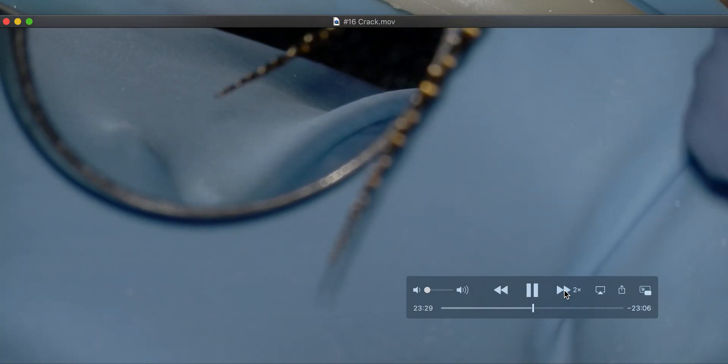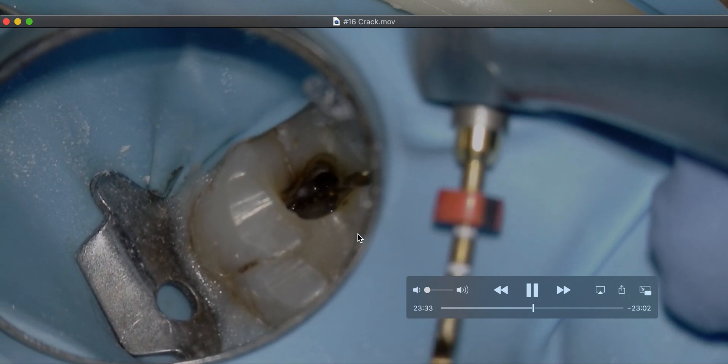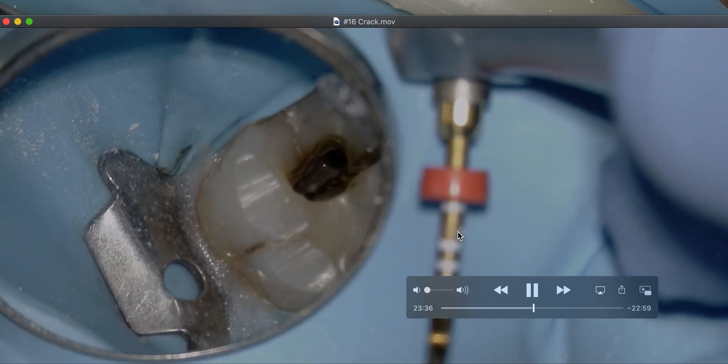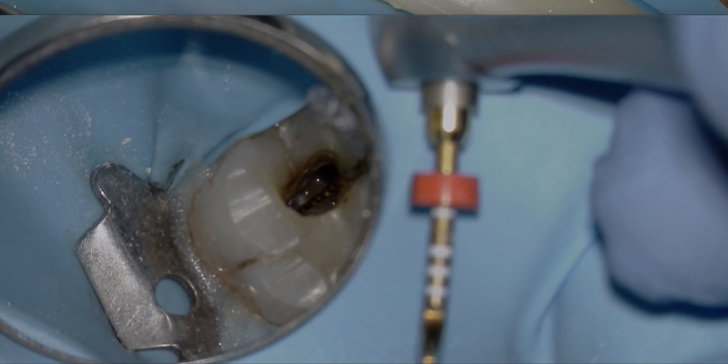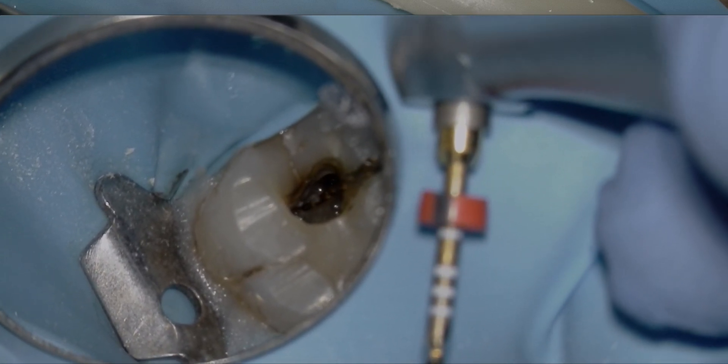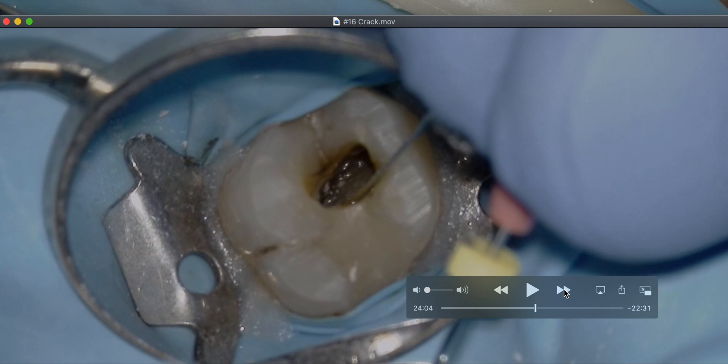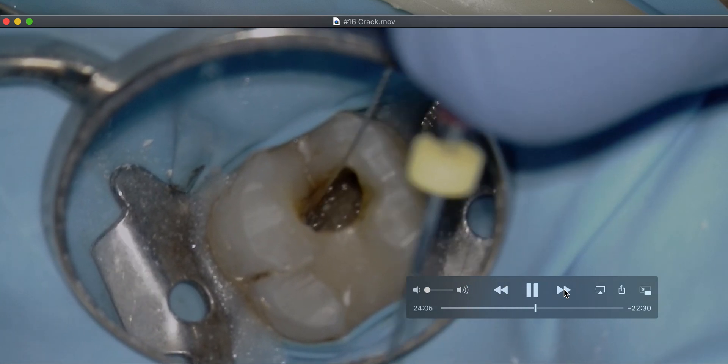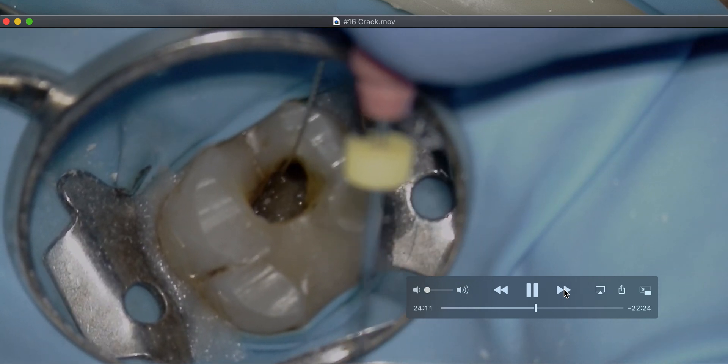This is the problem with maxillary molars. There will be a point where you're kind of like, oh, I give up. This is the next level. I've had enough. I can't get that file in there. I'm going to see if my WaveOne Gold can make its way down there. Because with a six file, it becomes tedious. It's really flexible. You can see this is fiddling around with MB2s.